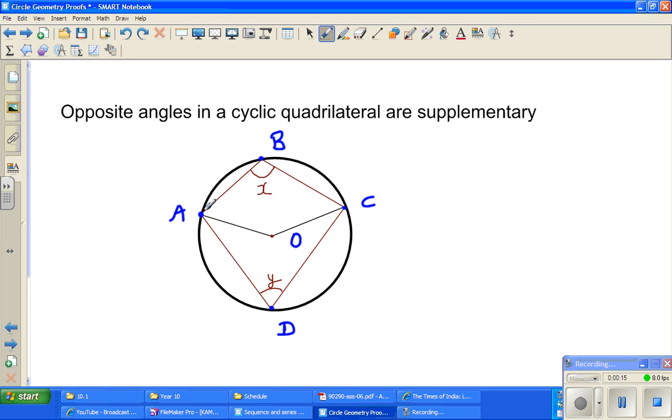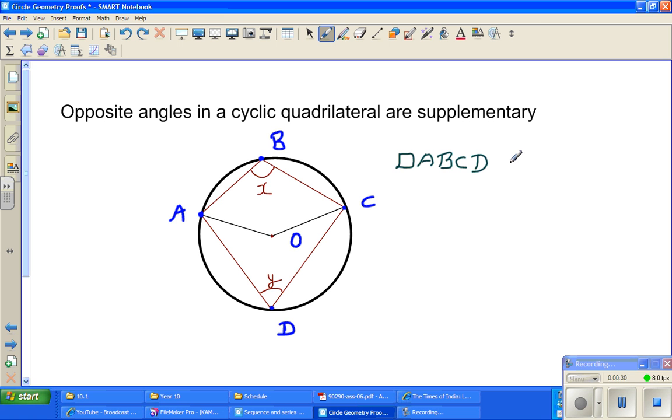Now, this quadrilateral ABCD, where all the vertices are points on the circle, is called a cyclic quadrilateral. Let me be very clear: this quadrilateral ABCD is a cyclic quadrilateral.